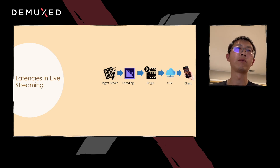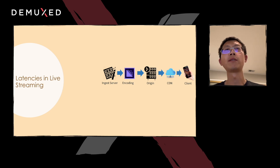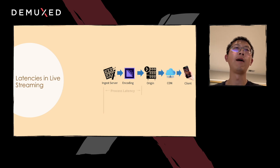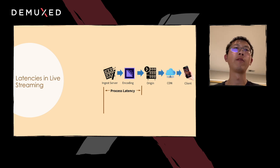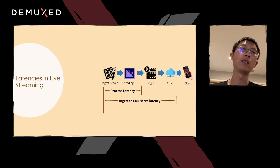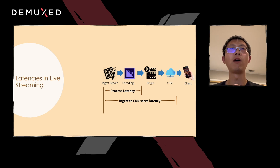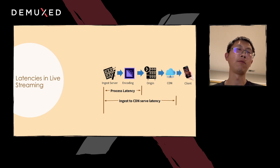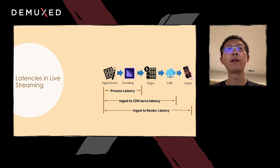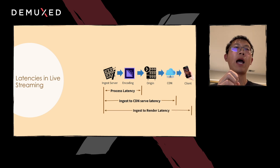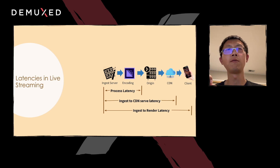Instead, we are focusing on three latencies along the pipeline. The processing latency is the time between the video frame arriving at the ingestion server to the video frame being ready to serve from the origin server. The ingest-to-CDN-on-server latency is from the video frame arriving at the ingest server to the video frame obtained from the CDN with the same timestamp. The ingest-to-render latency is the time between the video frame arriving at the ingestion server to the video frame being displayed on the phone.